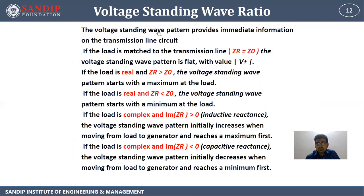The voltage standing wave pattern provides immediate information on the transmission line circuit. If the load is matched to the transmission line, Z_r equal to Z_naught, the voltage standing wave pattern is flat with value |V-positive|. If the load is real and Z_r is greater than Z_naught, the voltage standing wave pattern starts with a maximum at the load. If the load is real and Z_r is much less than Z_naught, the pattern starts with a minimum at the load. If the load is complex and imaginary part of Z_r is greater than zero (inductive reactance), the pattern initially increases when moving from load to generator and reaches the maximum first. If capacitive reactance, the pattern initially decreases and reaches the minimum first.